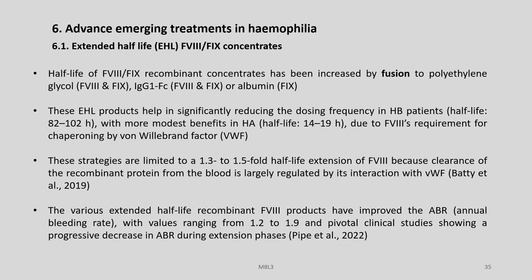What are some of the advanced emerging treatments in haemophilia? One is extended half-life factor 8 and 9 concentrates. The half-life of factor 8 and 9 recombinant concentrates has been increased by fusion to polyethylene glycol, IgG1 Fc, or albumin. These extended half-life products help in significantly reducing dosing frequencies in Haemophilia B patients, with more modest benefits in Haemophilia A, where the half-life is 14 to 19 hours due to factor 8 requirements for chaperoning by von Willebrand factor. These strategies are limited to a 1.3 to 1.5-fold half-life extension of factor 8 because clearance of the recombinant protein is largely regulated by its interaction with von Willebrand factor.